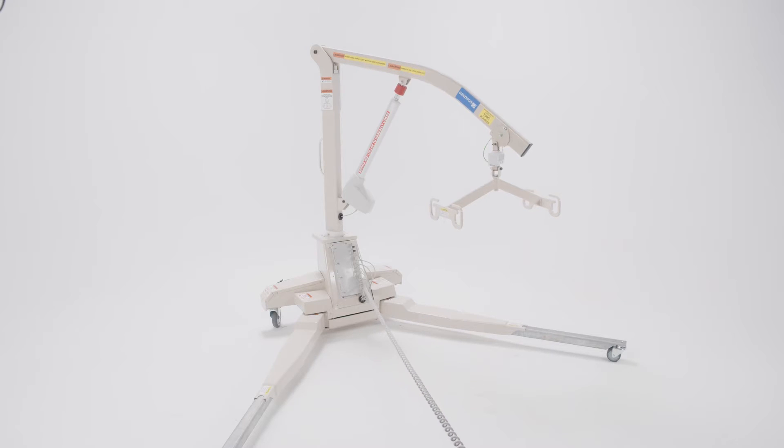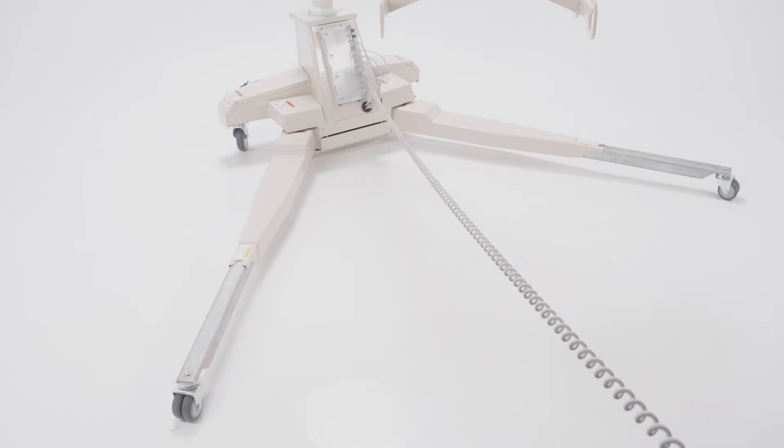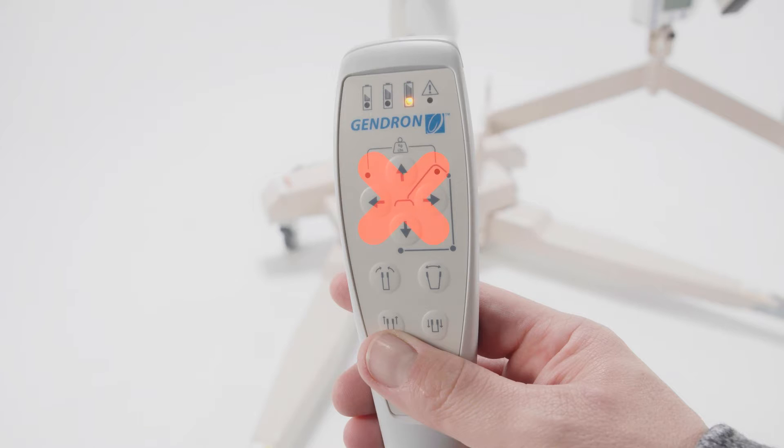For the lifting arm to raise or lower and the mast to rotate, the legs must be fully extended and completely open. If either of these two conditions are not met, no mast or lifting arm function can occur.